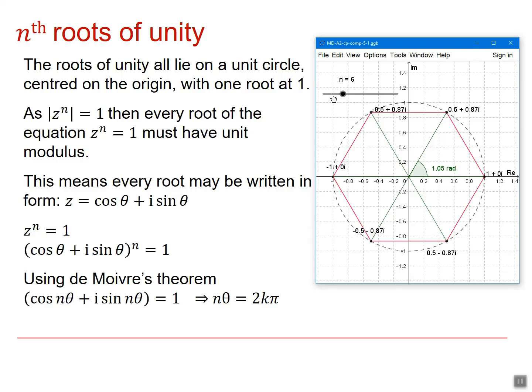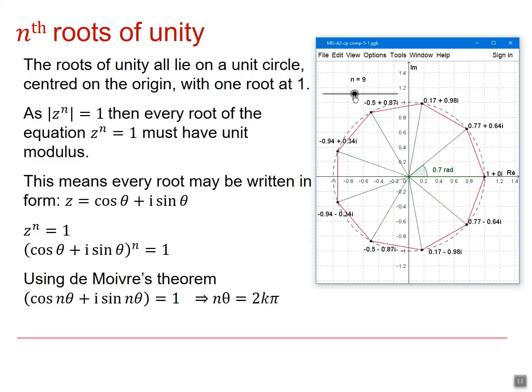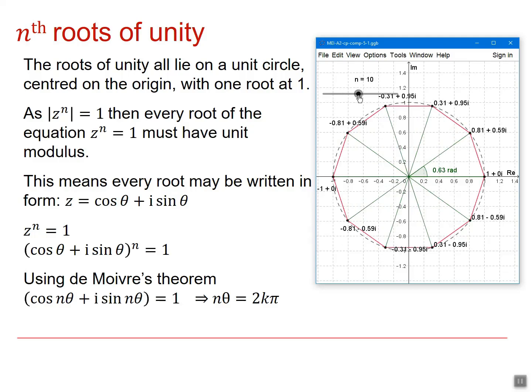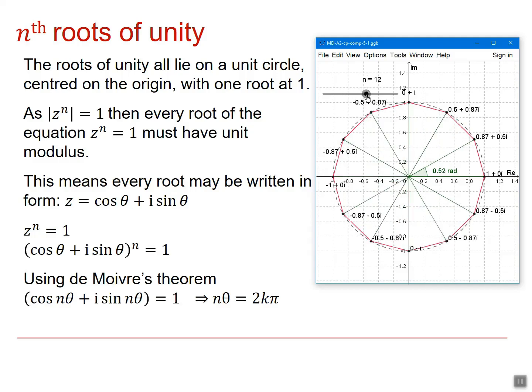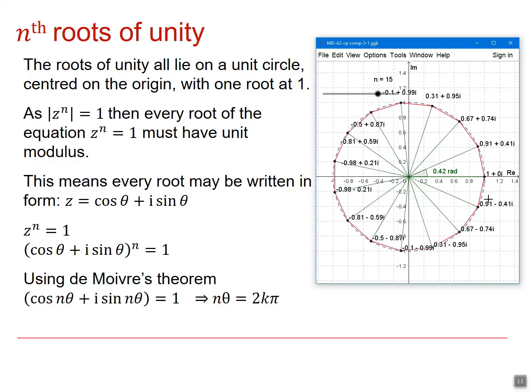If I change the value of n, then I just increase the number of solutions, and therefore I get an increase in the number of points around the circle. So if I go up to 15, you can see I get 15 roots for z to the 15 equals 1.